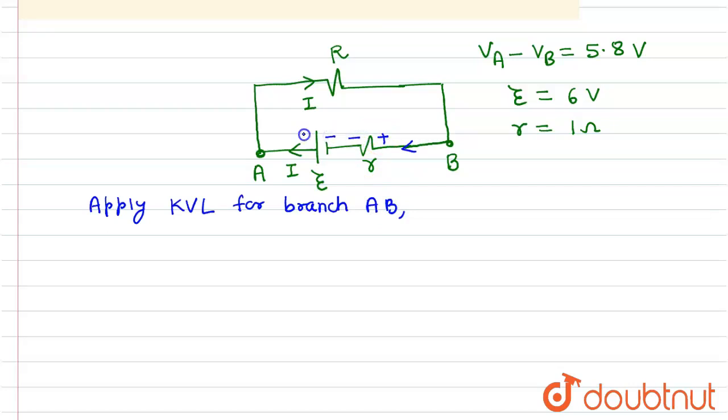This is the negative terminal of the battery, this is the positive terminal of the battery. So VB minus I into r plus E equals VA, so VA minus VB equals E minus Ir.